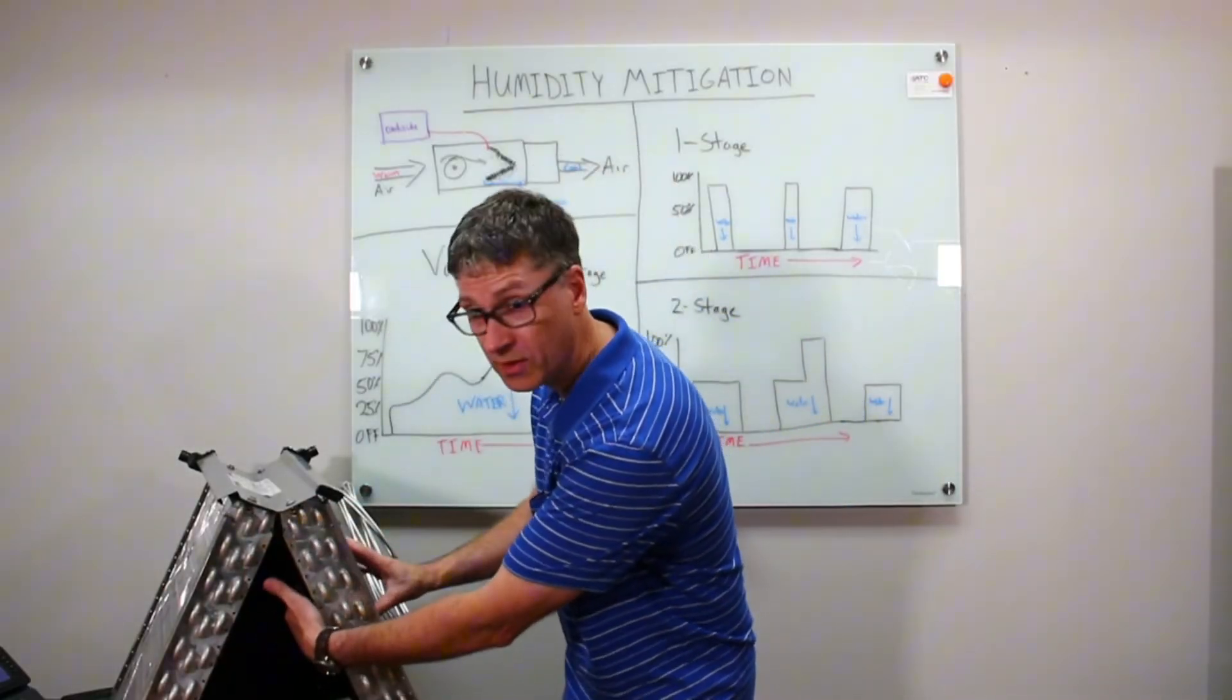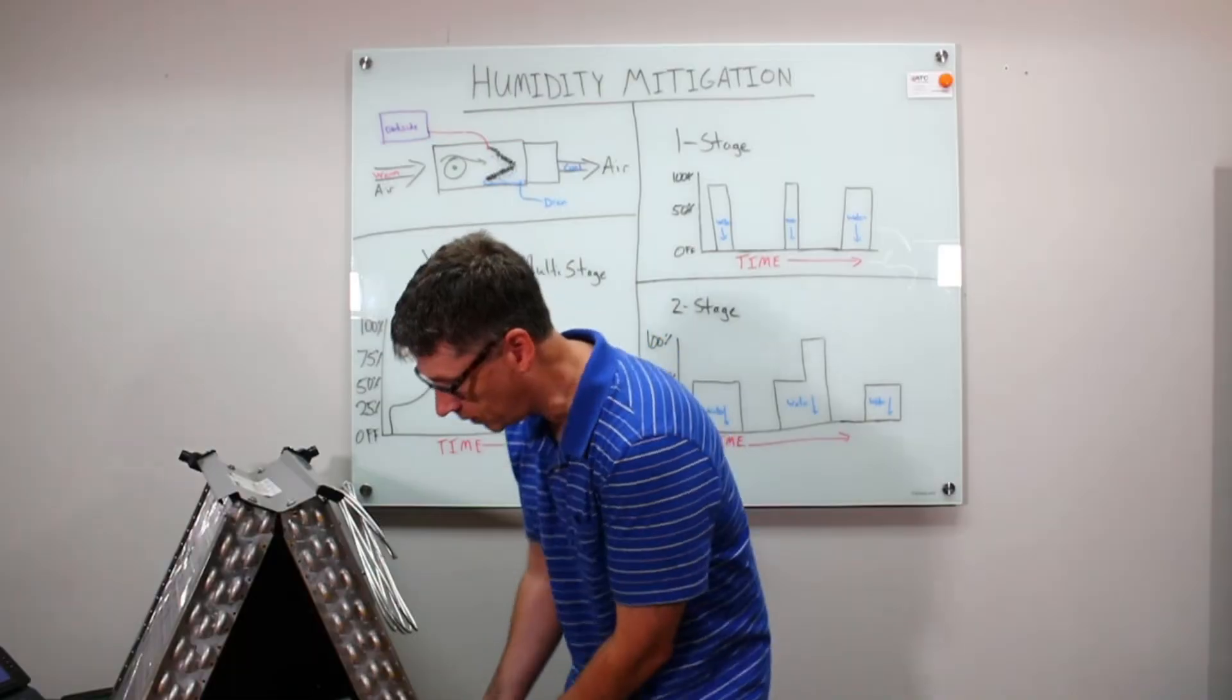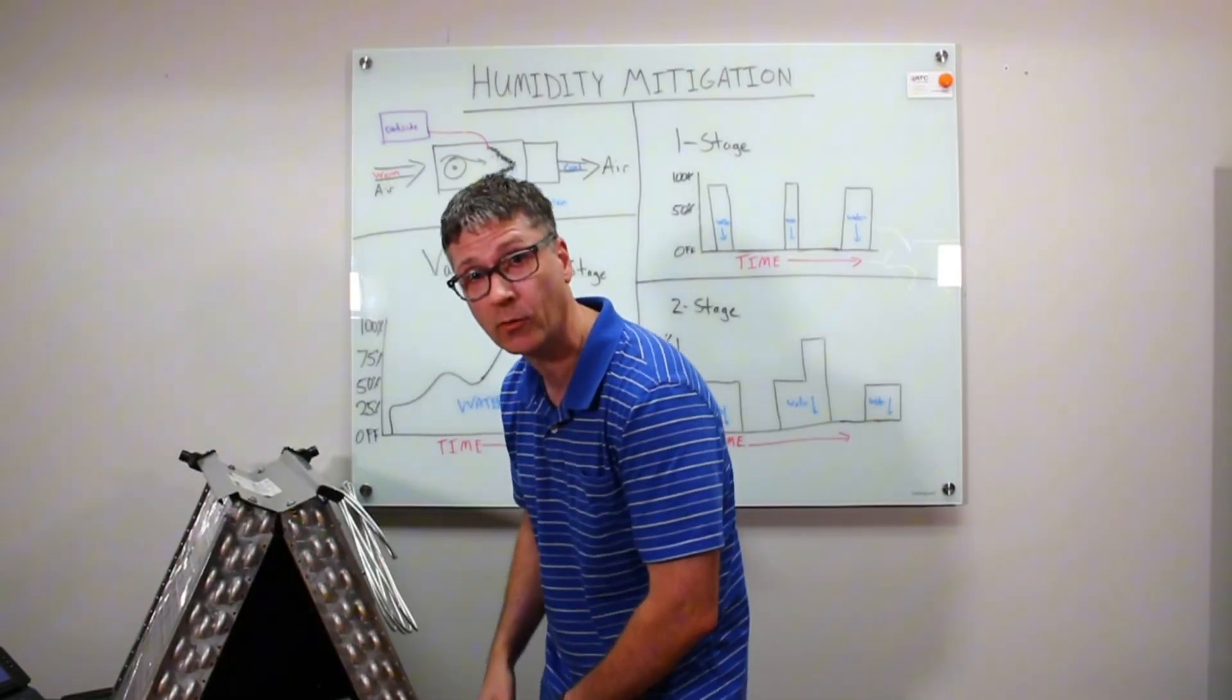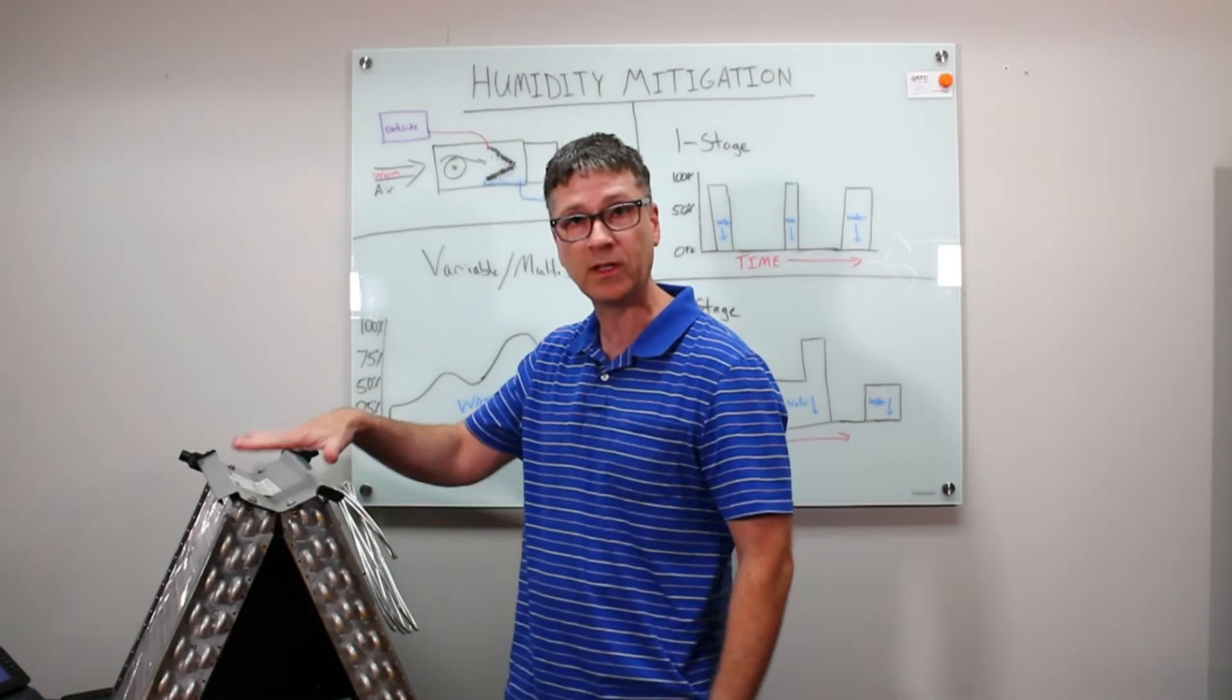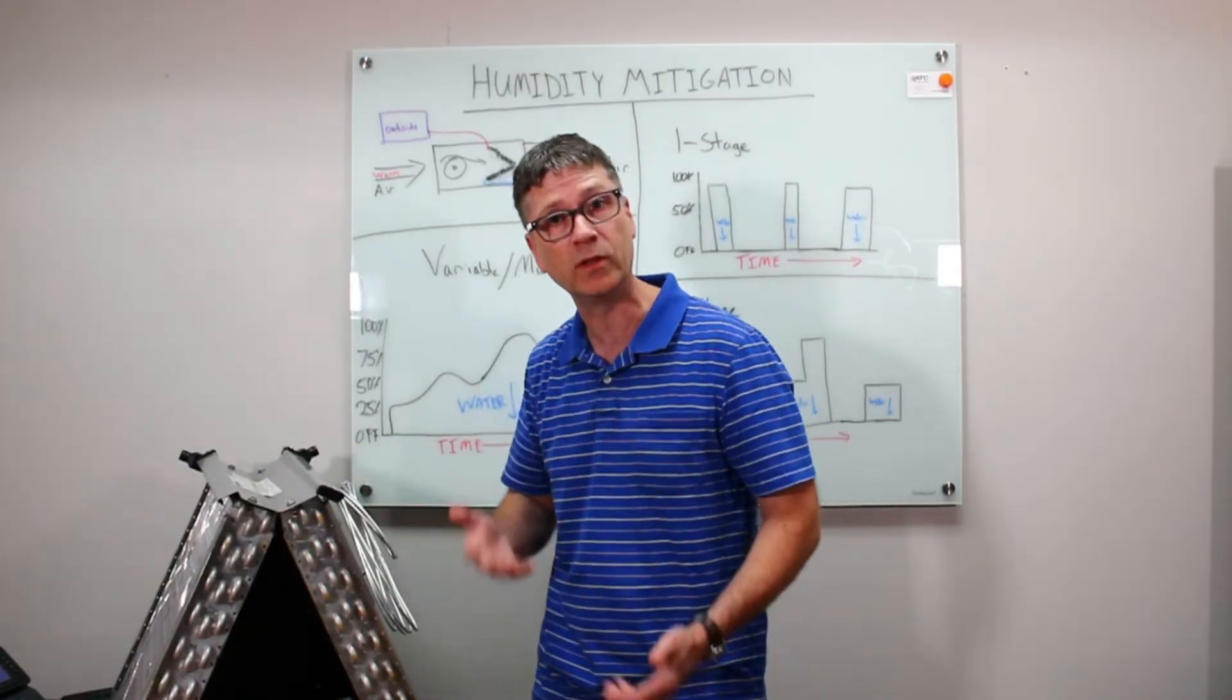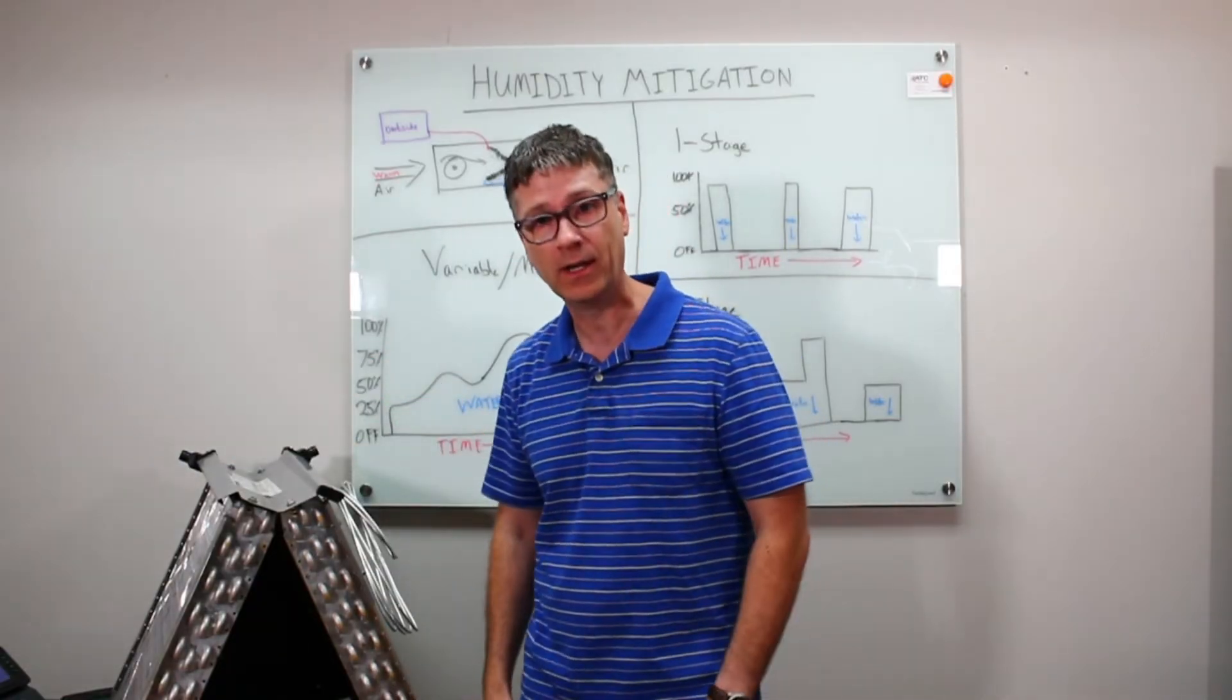Air comes up through this thing. This thing gets really cold. There's a drain pan on the bottom where all the water accumulates. But this is really the engine inside your house that's removing humidity and cooling your air at the same time.